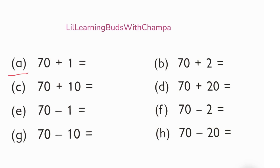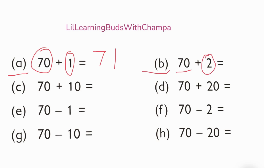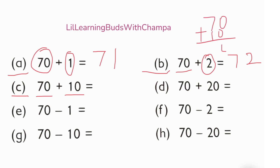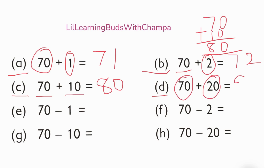70 plus 1: add 1 to 70, so 70 plus 1 makes 71. 70 plus 2: add 2 to 70. Add 10 to 70: 70 plus 10 makes 80. Add 20 to 70: for 70 blocks you add 20 more blocks, you will get 90 blocks.